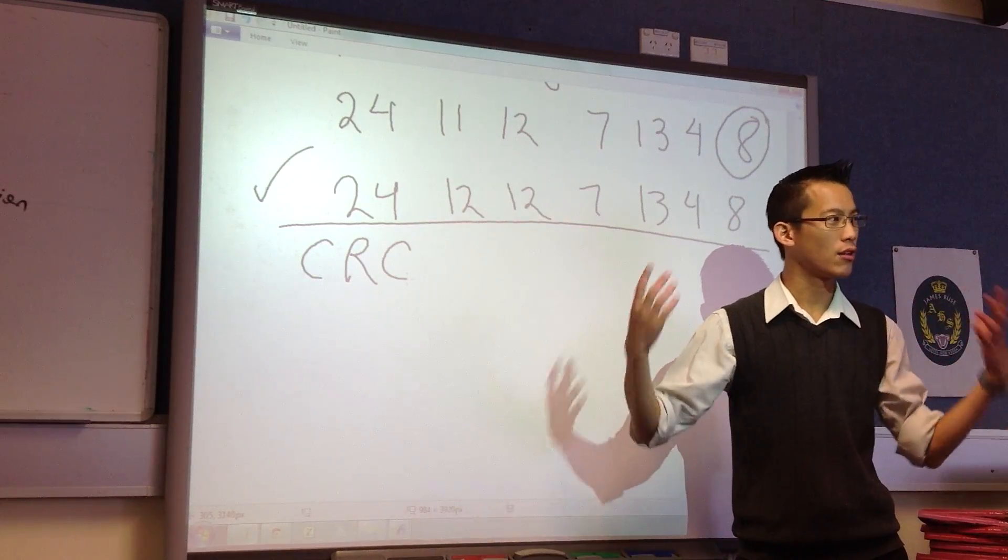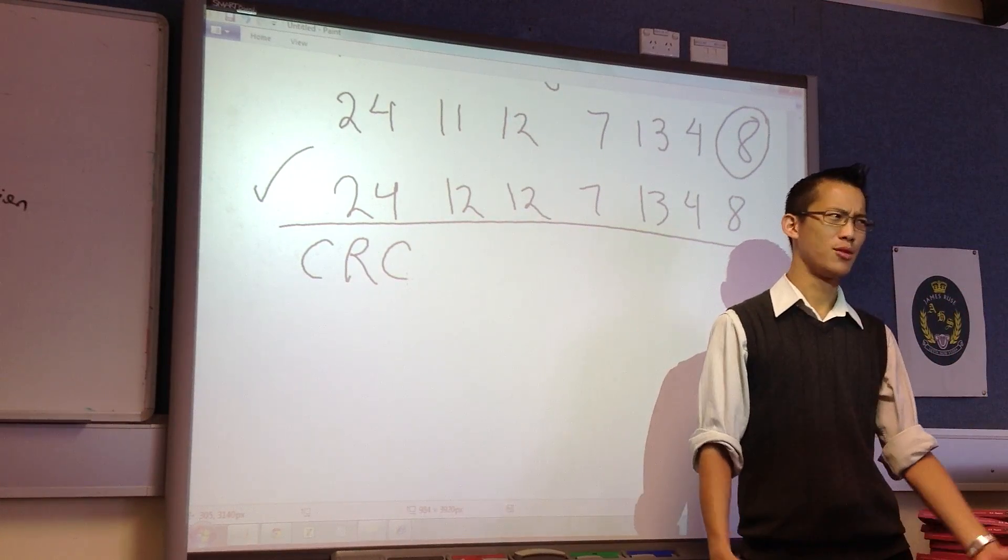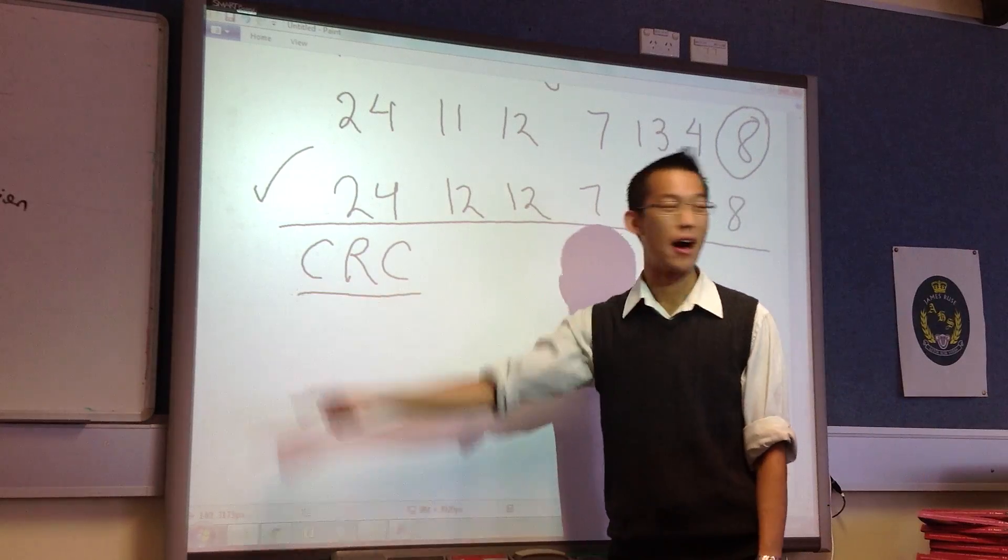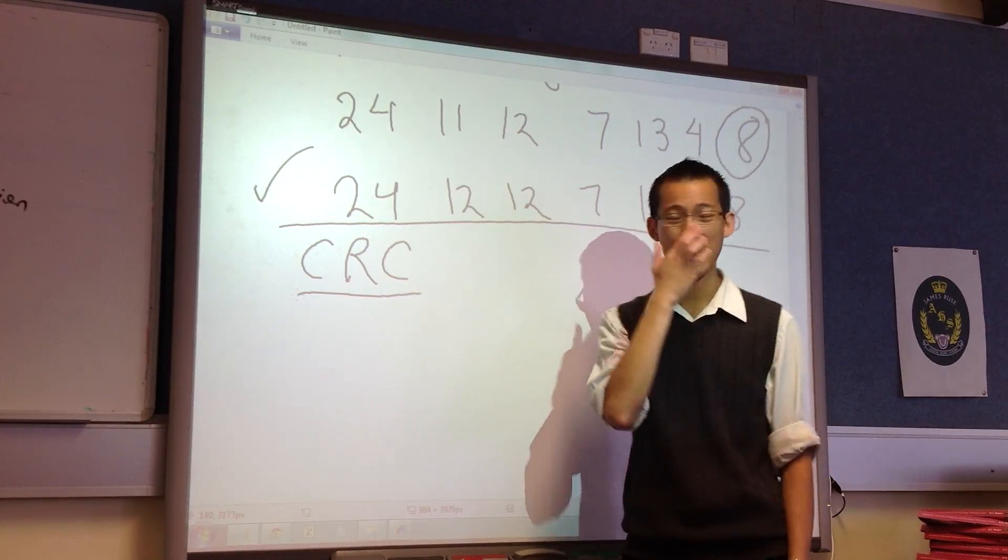People invented what's called the Cyclic Redundancy Check. Terrible old name, very long, but very, very clever in its method. How does it work?